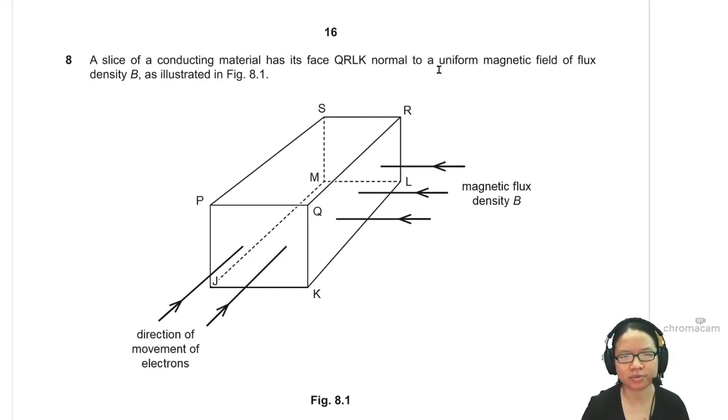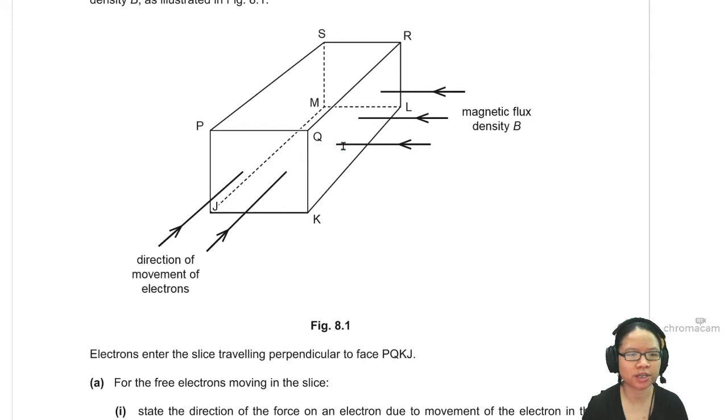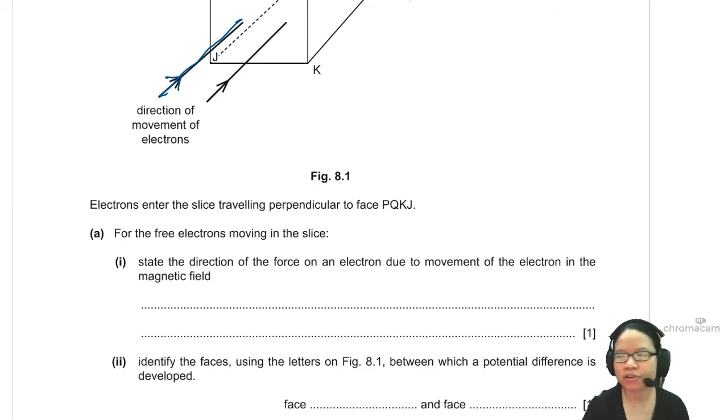So there's a conducting material, then we put in electrons in this direction. This is the direction of movement of electrons. Electrons are being shot in this way, and your magnetic field with magnetic flux density B is going inside in this direction. For the free electrons moving in the slice, state the direction of force on an electron due to movement of the electron in the magnetic field.